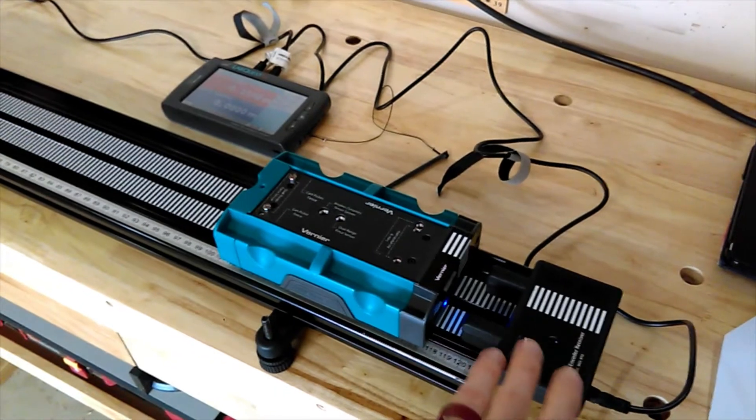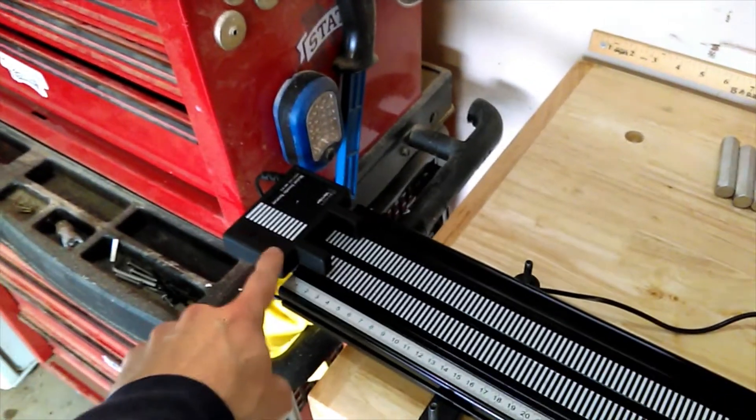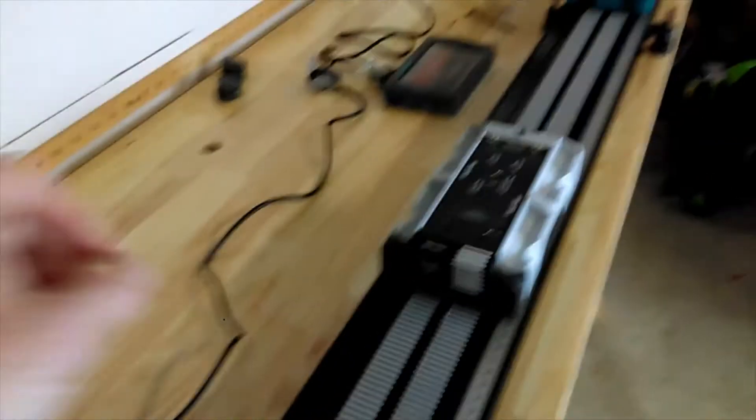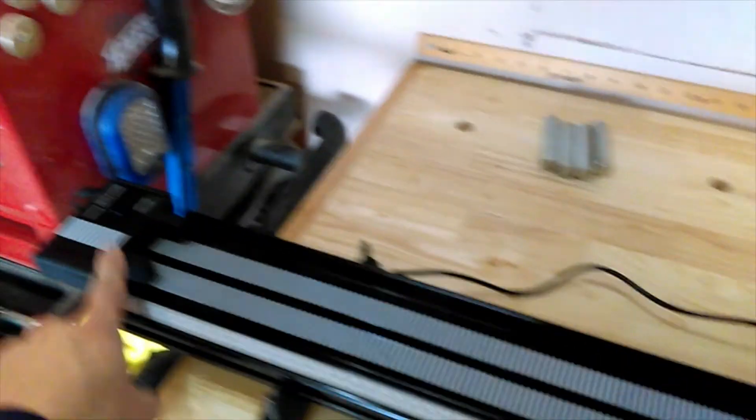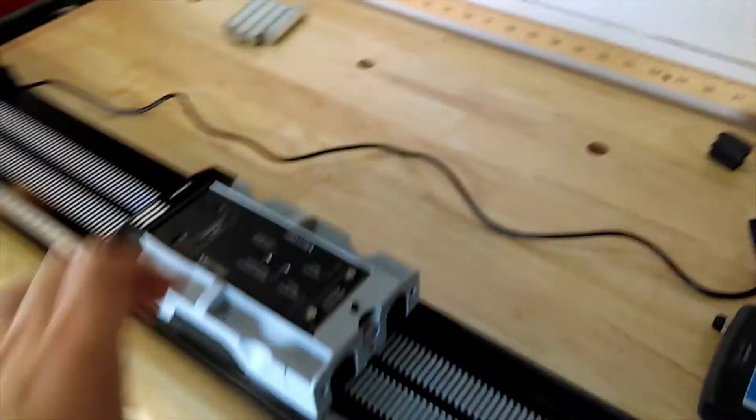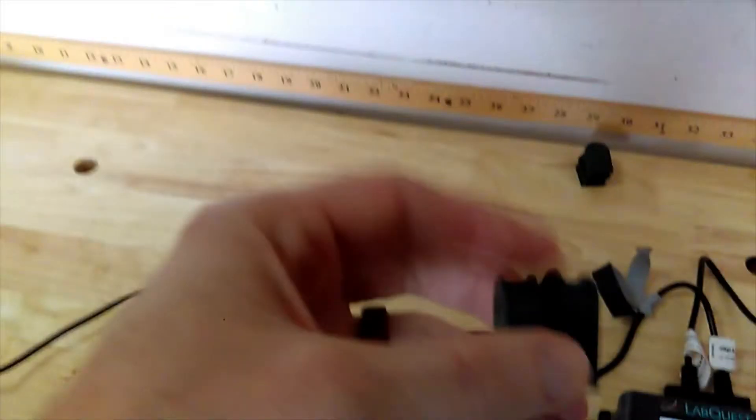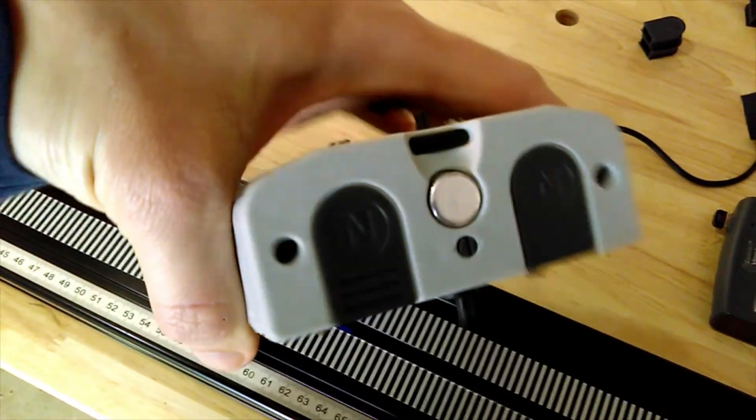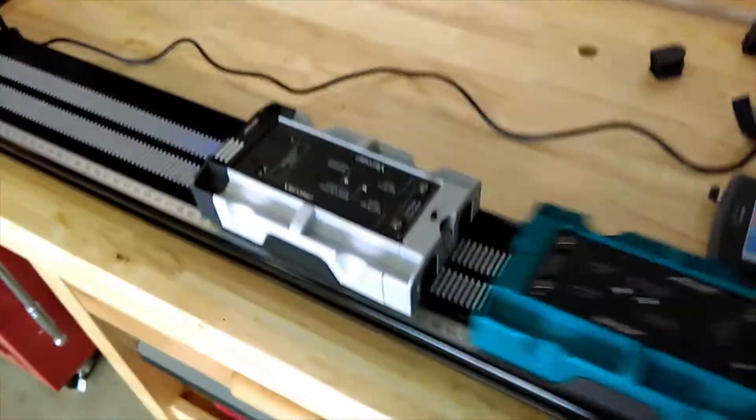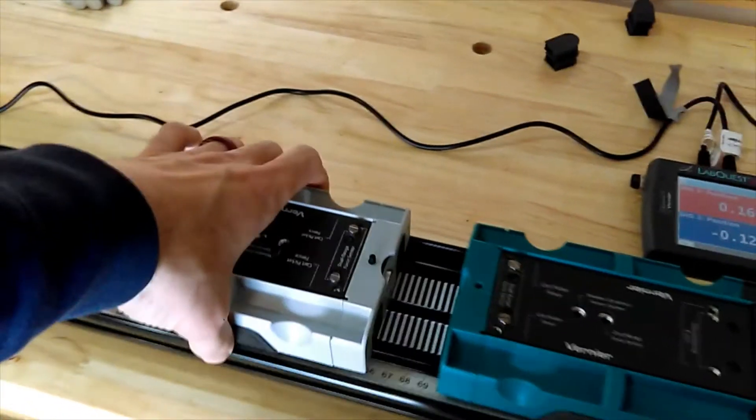I still kept our motion encoder on one end, but I added a second motion encoder on the other end. Now we need to turn on car number two so it's speaking to the second motion encoder. I've also switched out the Velcro tabs for magnetic tabs. I turned all these tabs with the north pole facing outward, so the cars will repel each other and create an elastic collision.